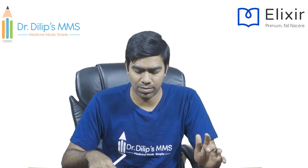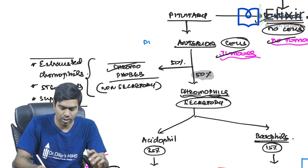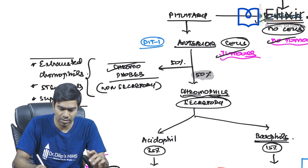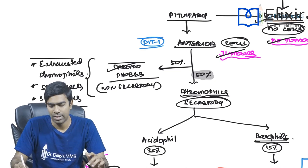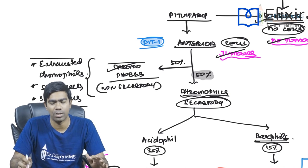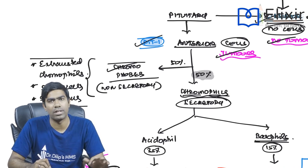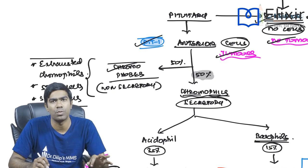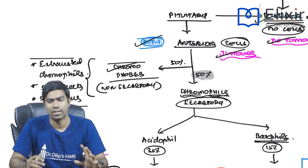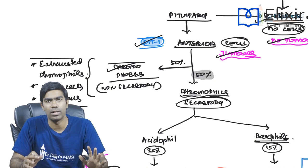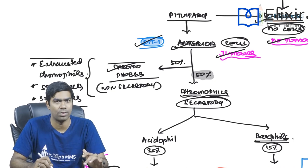Embryologically, the anterior pituitary comes from Rathke's pouch (pharyngeal ectoderm). An important transcription factor for pituitary growth is PIT1 — a pituitary-specific positive transcription factor. PIT1 is very important in cases of congenital hypoplasia of the pituitary; mutations in PIT1 are relevant in hypopiturism. PIT1 is the most important transcription factor for the growth of the anterior pituitary embryologically.